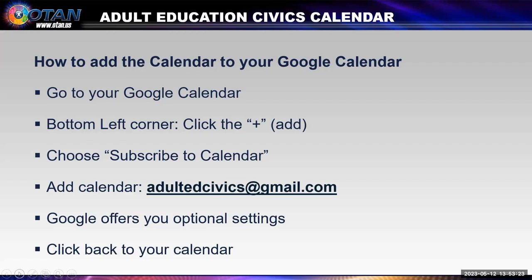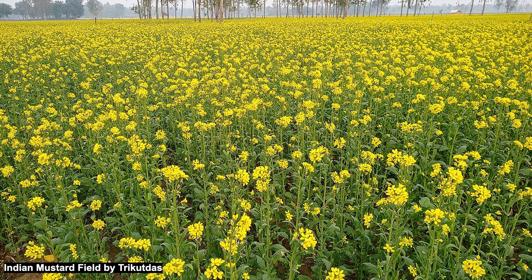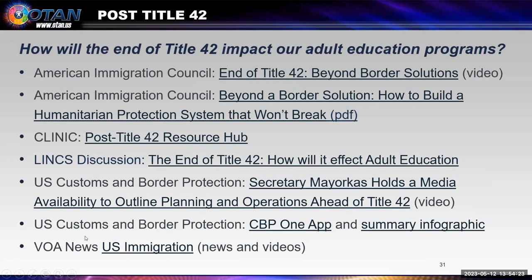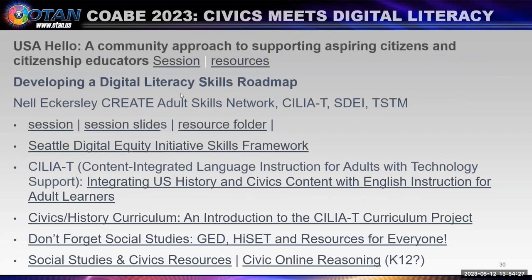These next slides are a hodgepodge of different resources. USA Hello talked about community support for hiring citizenship teachers and students — take a look at those resources. Another really good presentation at CCAE was 'Developing a Digital Literacy Skill Roadmap' by Danielle Eckersley, working with an adult school skills network spearheaded by a university in Minnesota. They're trying to incorporate adult education pedagogy, adult literacy, and civics. There's a sample of their curriculum and how to implement it in different courses — start clicking those links and you'll get lost because there's so much.